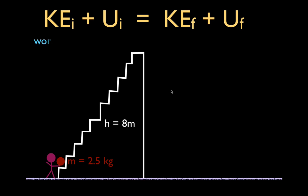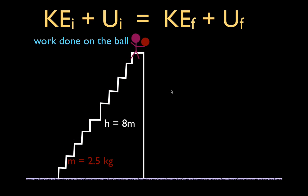This person is going to carry the ball up the stairs and we want to know how much work do they do on the ball when they carry it from here up to here. For work, we are going to start out with the formula: work is the force times the distance times the cosine of theta. So we want to figure out what is the force, what is the distance, and what is the cosine of theta — and then we can solve for the amount of work.